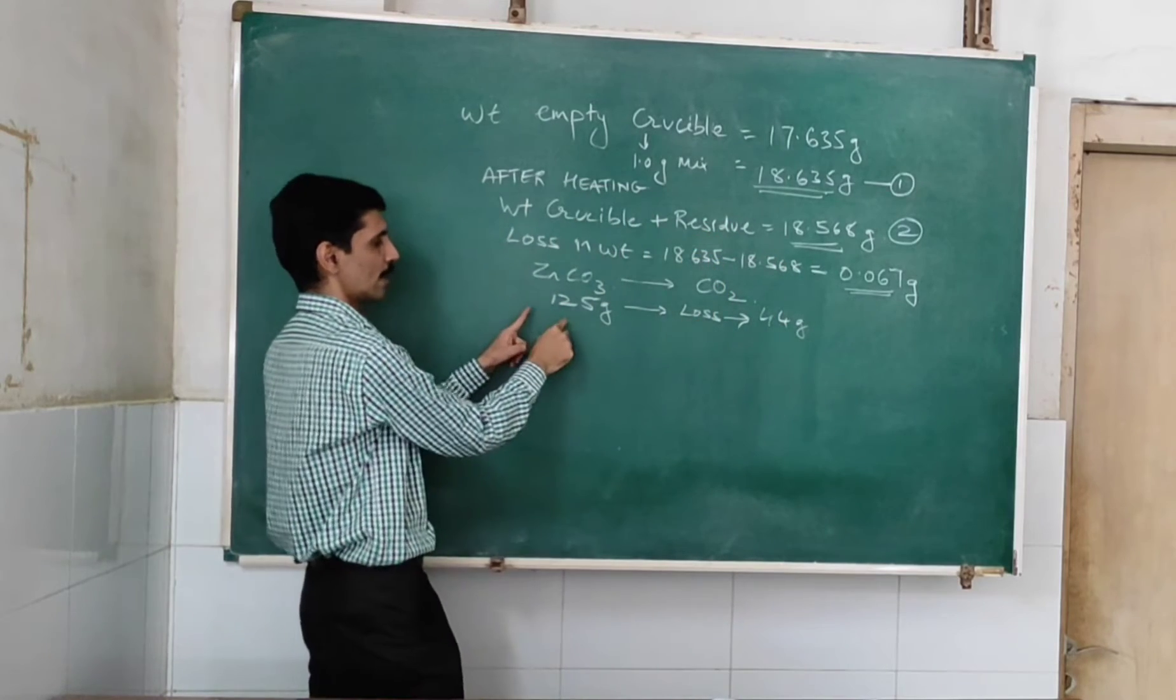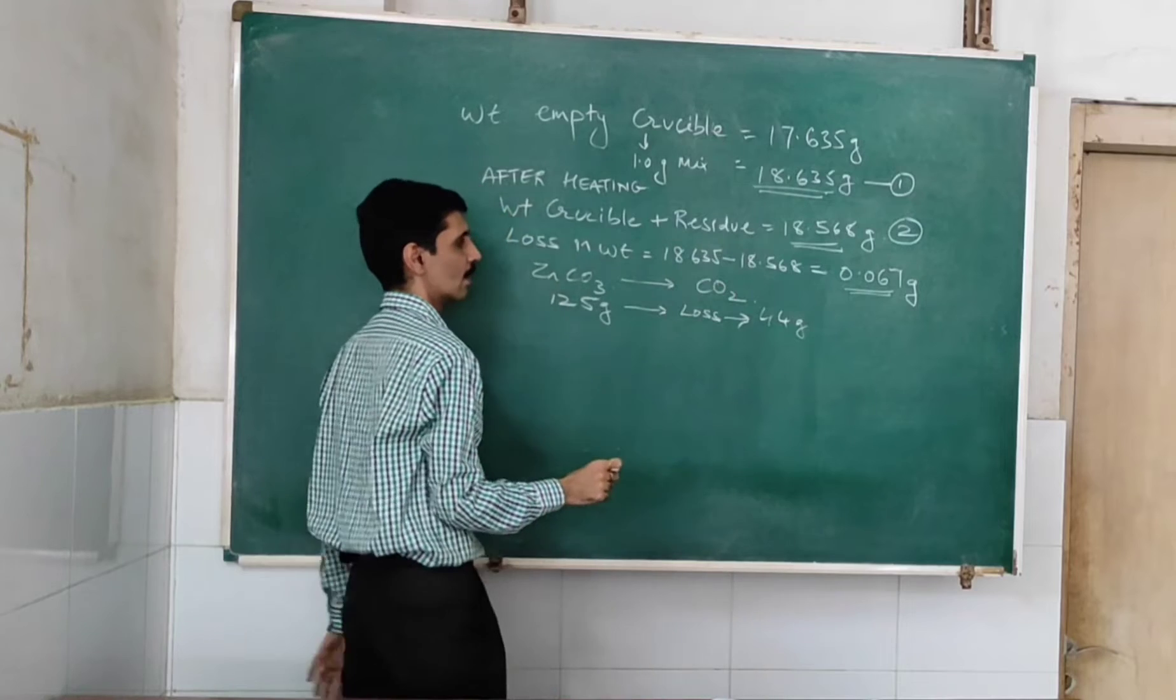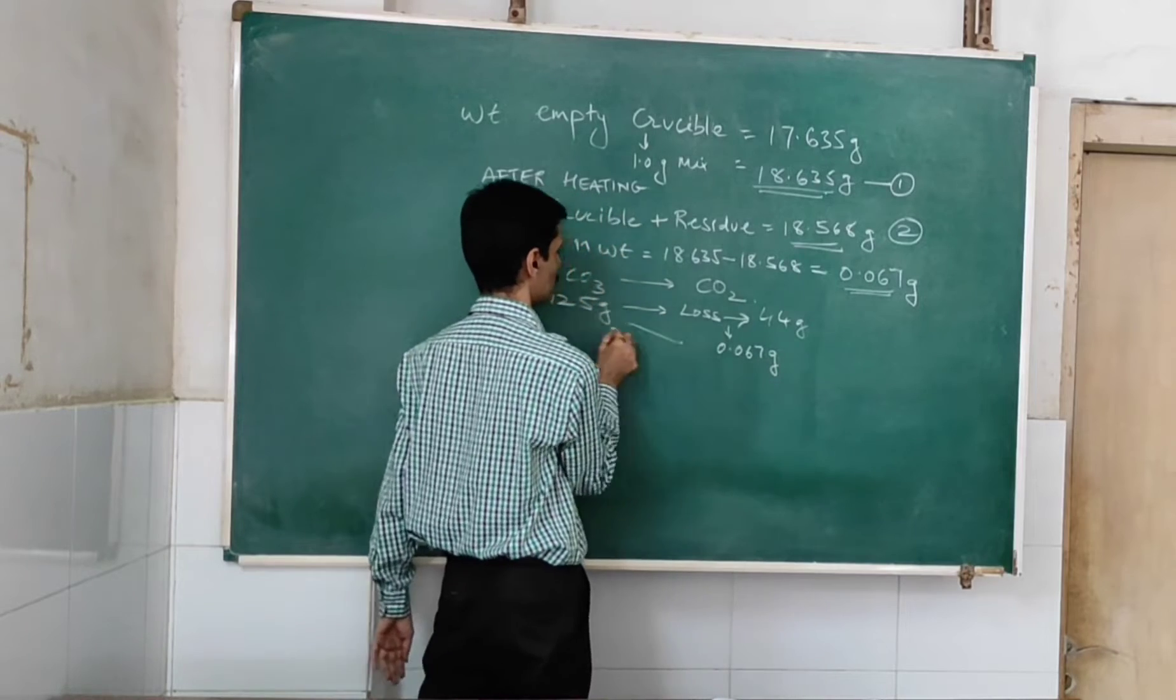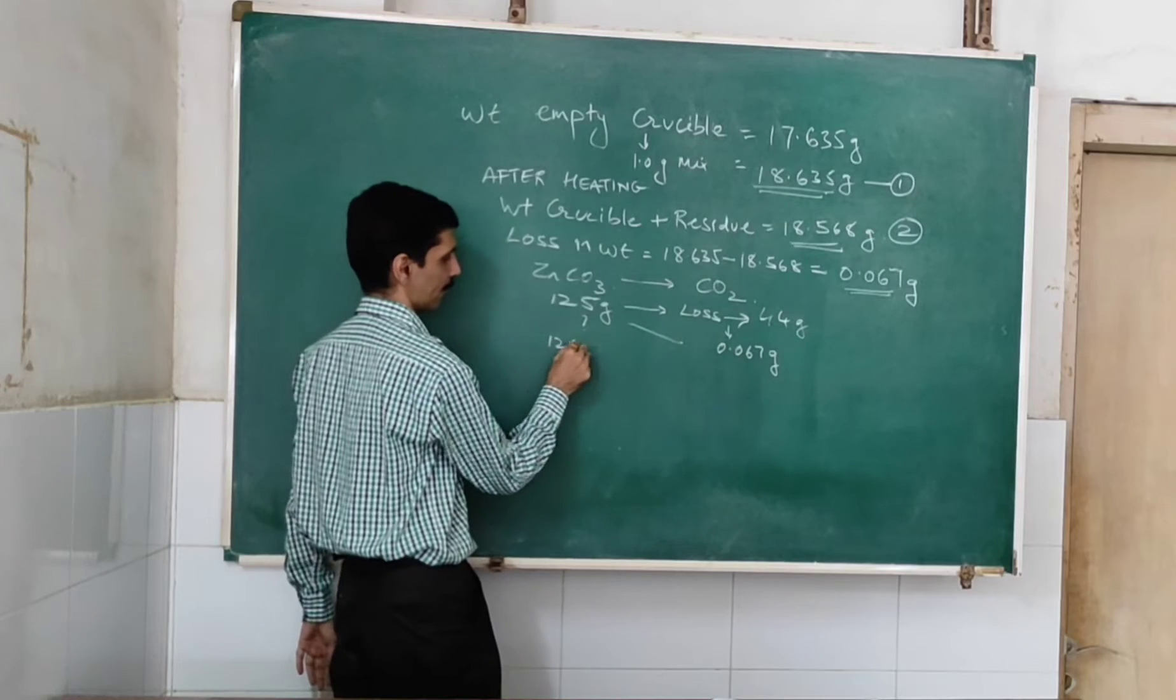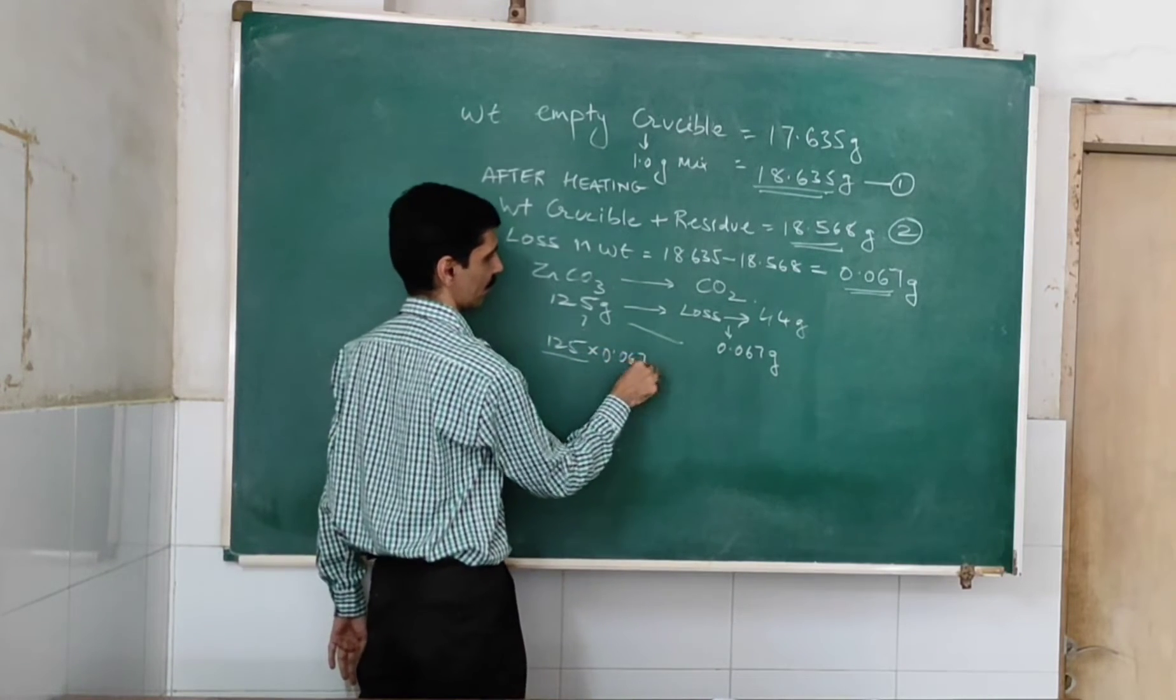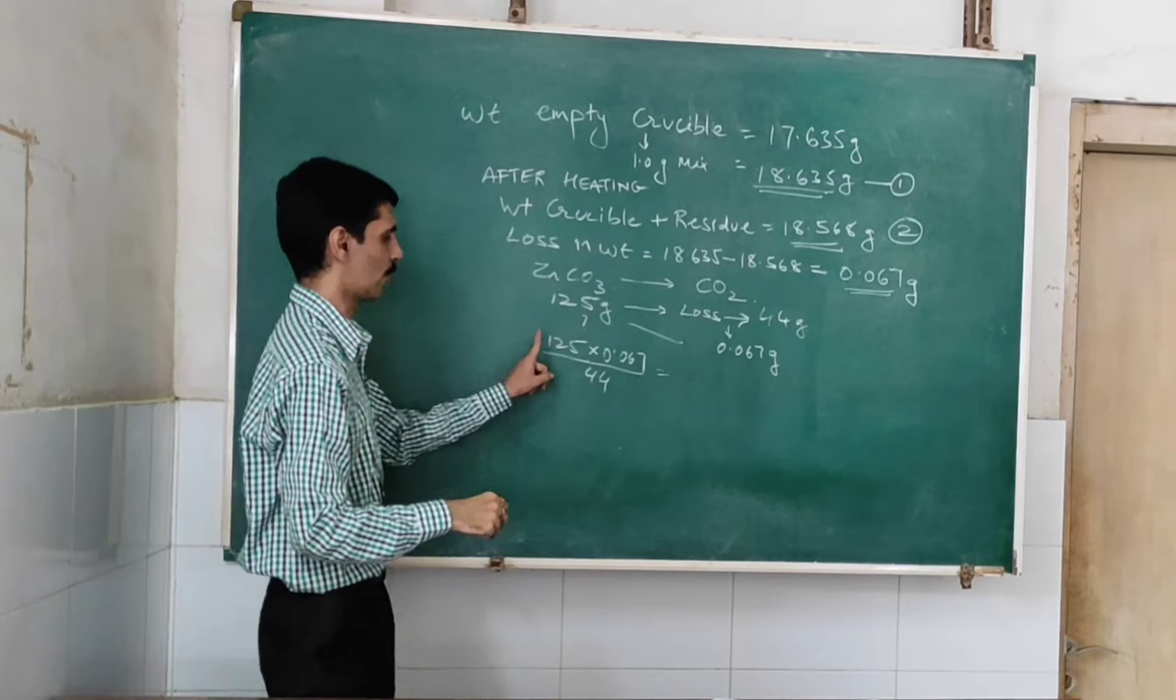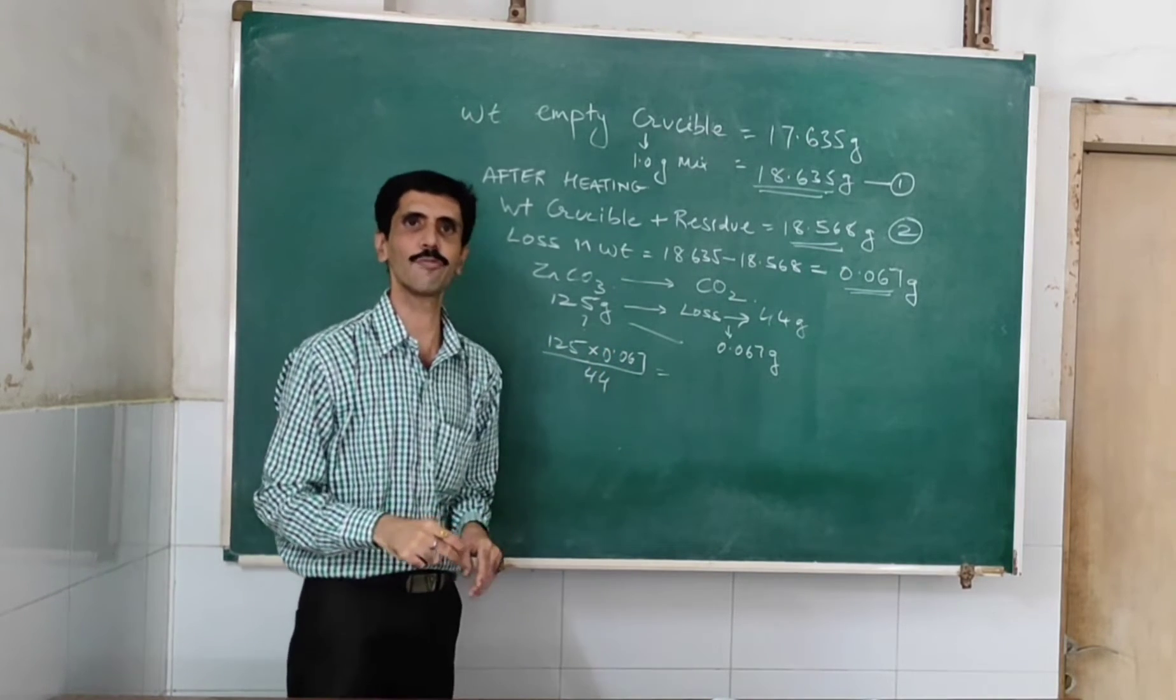So 125 grams corresponds to a loss of 44 grams. So therefore, the loss of 0.067 grams should correspond to how much of zinc carbonate. So what we do is, therefore, 125 into 0.067 divided by 44. This is what we do. Cross multiplication. So 125 into 0.067 divided by 44, so that is going to give you 0.1903.